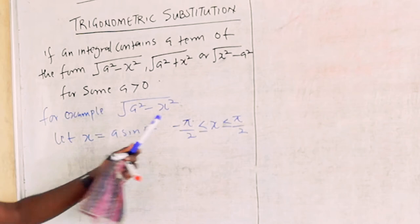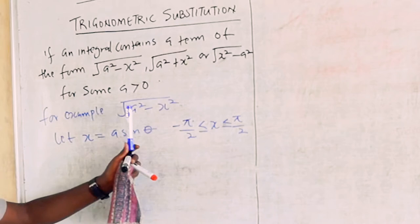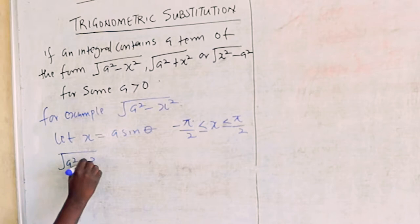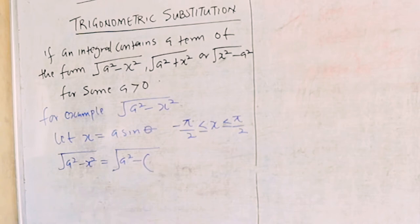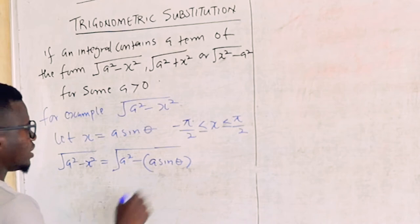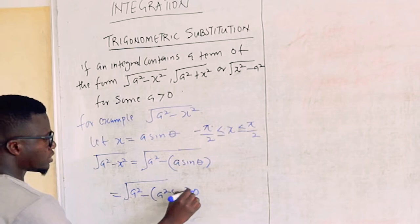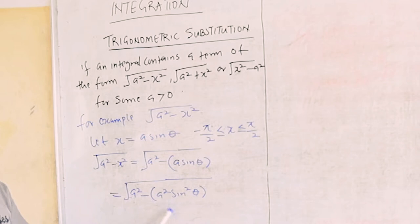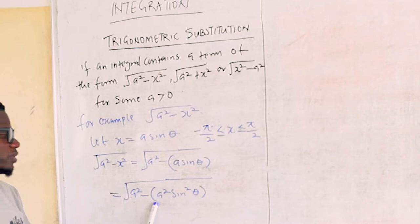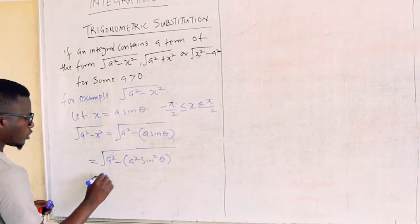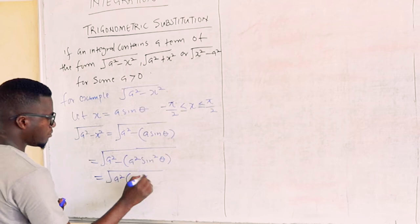So here I have x squared. I'll come back to this square root and substitute. Instead of x squared, since I said let x equal a sine theta, I'm going to have square root of a squared minus a squared sine squared theta. I discover that a squared is common in this equation, so I'm going to factor out a squared. I'll have square root of a squared bracket 1 minus sine squared theta.